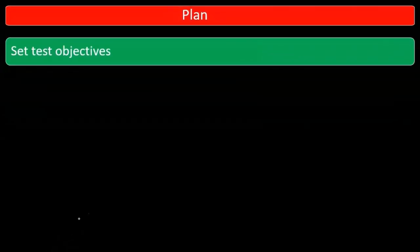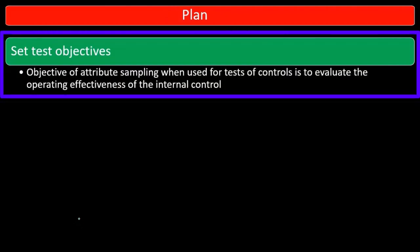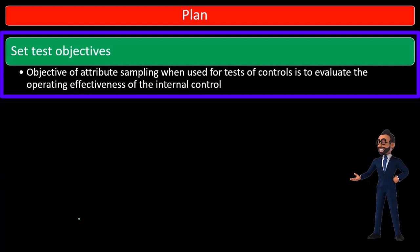Within planning, we will set test objectives. Objective of attribute sampling when used for tests of controls is to evaluate operating effectiveness of the internal controls.